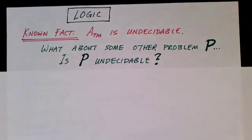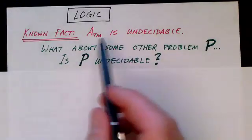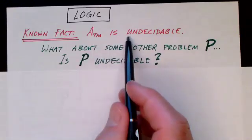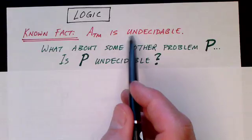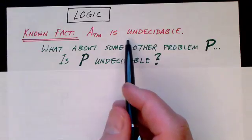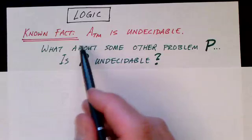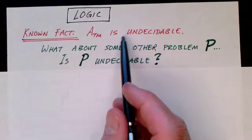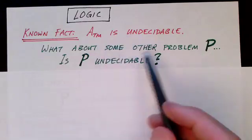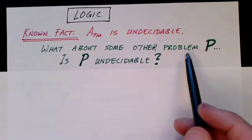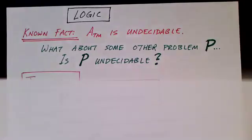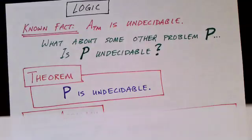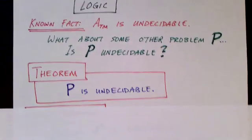We'll start with our known fact that the acceptance problem for Turing machines is undecidable. In a previous video, we proved that using a different technique, so this is a given known fact — this is our hard problem. Now, what about some other problem P? Is P undecidable? We might have a theorem that says P is undecidable, and the question is how do we prove that?